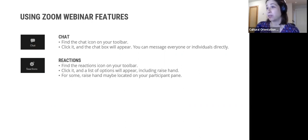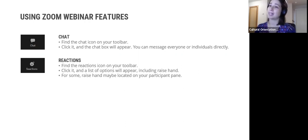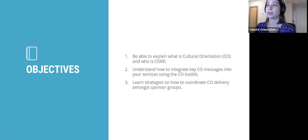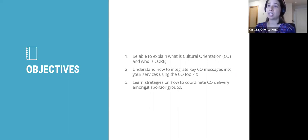To use the reactions feature, find the icon that looks like a smiley face and click it to use the raise hand feature. For some of you, the raise hand may be located on the participant pane. You can raise your hand and Ella will unmute you if you want to speak verbally. At the end of this training, participants should be able to explain what cultural orientation is and who CORE is, understand how to integrate key cultural orientation messages using the toolkit, and learn strategies to coordinate cultural orientation delivery amongst sponsor groups.